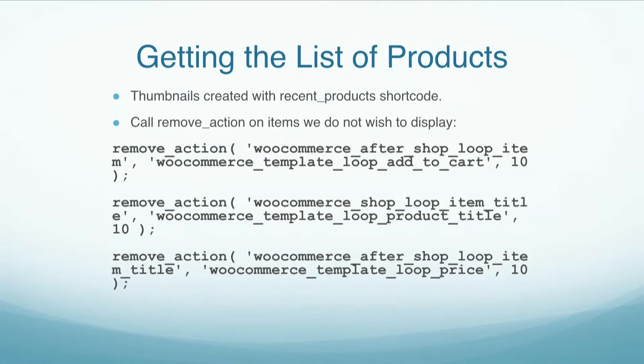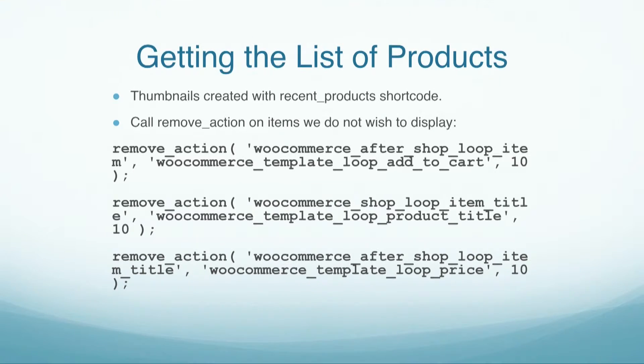Getting the list of products was pretty straightforward — I just used the recent product shortcode. However, this returned a whole bunch of stuff I did not want, like the add-to-cart button, the title, and the price. Again, I relied on WooCommerce actions, this time simply removing them so the items we did not want would not show up. That gives us just that little display of product list thumbnails across the top before you see the product detail.